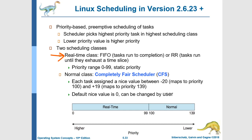A lower priority number means a higher priority task. The other class is for normal scheduling, done with the Completely Fair Scheduler — the CFS — and that's the scheduler we will be looking at in detail. The basic parameter that can be set with CFS is that each task can have a nice value, which can range between negative 20 and positive 19. A very low nice value means we want to give this task higher preference, whereas a high nice value means the task has less preference.